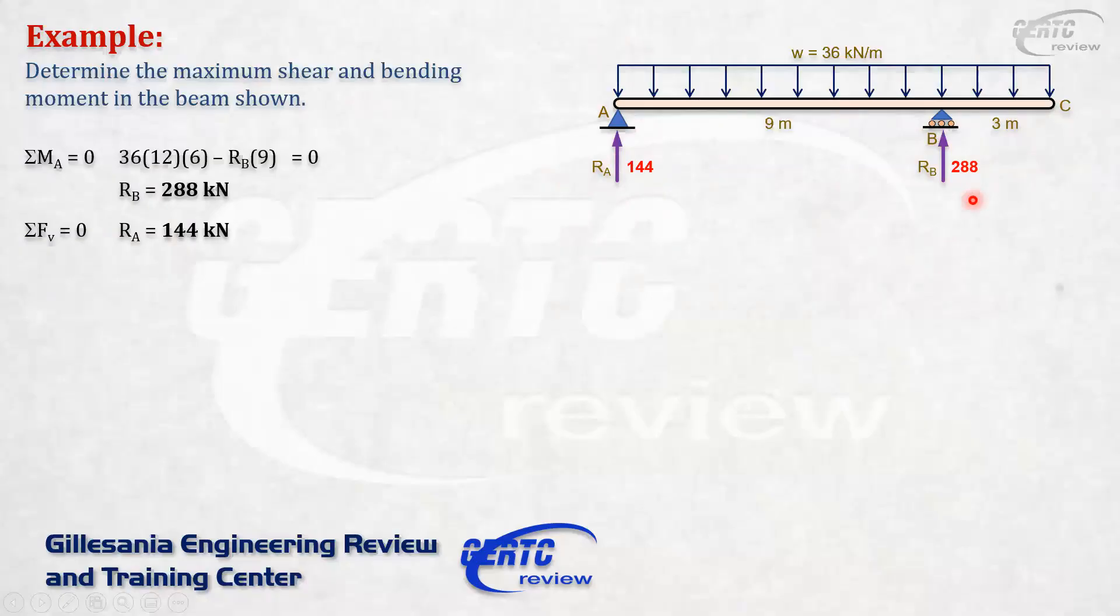Let's draw the shear diagram and then the moment diagram, because we don't know yet where the maximum moment occurs. Draw the vertical lines for the given load. Let's start with the shear diagram. Starting at A, there's an abrupt rise. So we go up 144. First identify the points, don't draw the curve yet. We go up 144, then we go down a total of 36 times 9. 144 minus 36 times 9 gives negative 180.